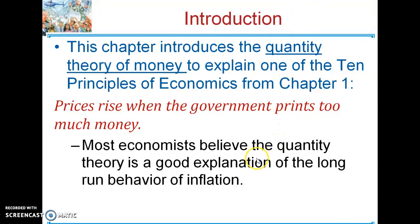Most economists believe this is true in the long run, meaning that once there's enough time for prices to adjust, this is what will happen when you print money. In the short term, the modern view is a little bit different — money might not be as neutral on the economy as it is in the long run. By neutral, I mean impacting real variables like GDP, unemployment rate, or real production of a country. So just note that this chapter really deals with the long-run behavior when you print money, basically saying it will just cause inflation and have no impact on real variables like real GDP, unemployment rate, and your economy.